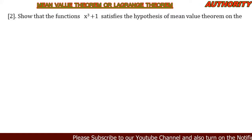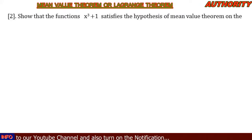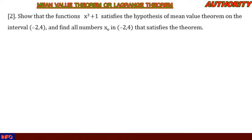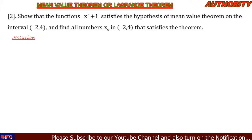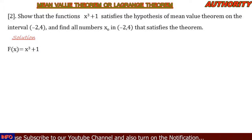Alright, welcome again. We are still talking about the Mean Value Theorem. Let's consider this question: show that the function f(x) = x³ + 1 satisfies the hypothesis of the Mean Value Theorem on the interval [-2, 4], and find all numbers x₀ in the interval [-2, 4] that satisfy the theorem.